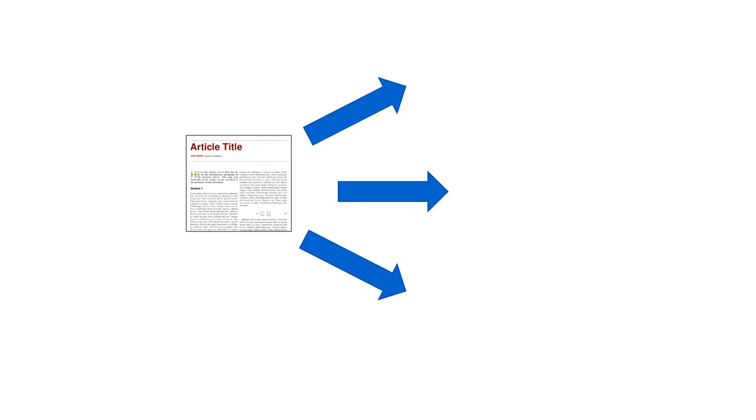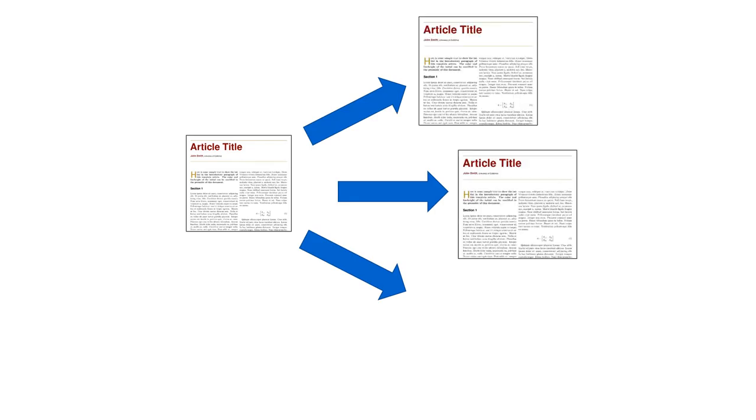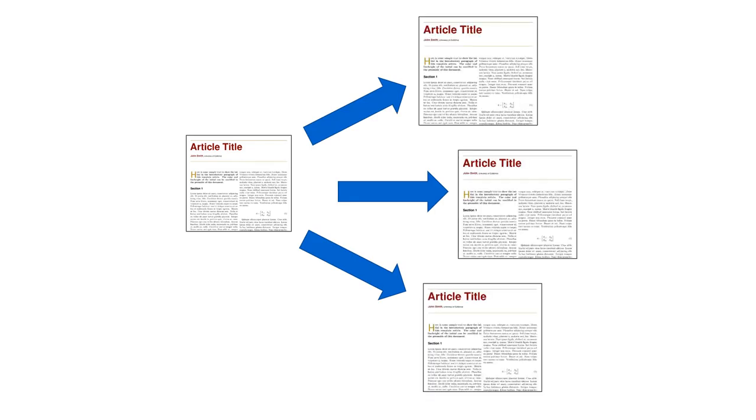The best ways to use Google Scholar are to find the full text of known items, or to locate new articles or books that cited the same article.